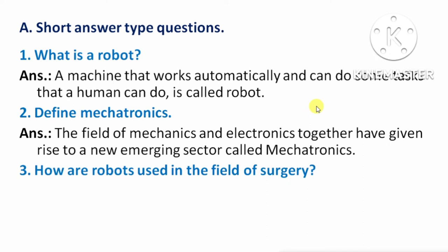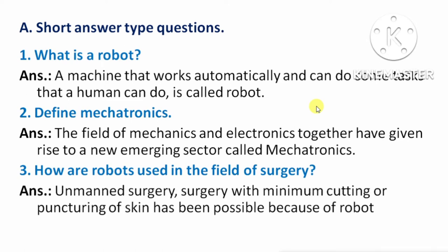Next question: how are robots used in the field of surgery? Answer: Unmanned surgery — surgery with minimum cutting or puncturing of skin has been possible because of robots. Means, robot की वजह से ही unmanned surgery, बिना इंसानों के surgery possible हो सकी है, और ऐसी surgeries में कम से कम cut किया जाए इंसान के skin को, यह भी संभव हो सका है robot की वजह से।